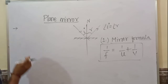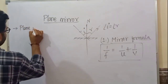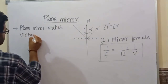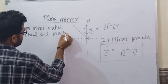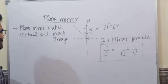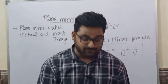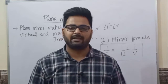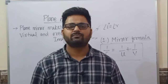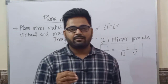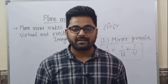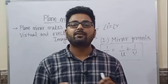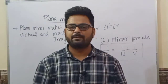So in case of plane mirror, the first property is: a plane mirror makes a virtual and erect image. Virtual means the image will always be formed behind the mirror. For image formation, the essential condition is there must be two or more rays which must meet at a point. If they actually meet, a real image forms; if they only appear to meet, a virtual image forms.